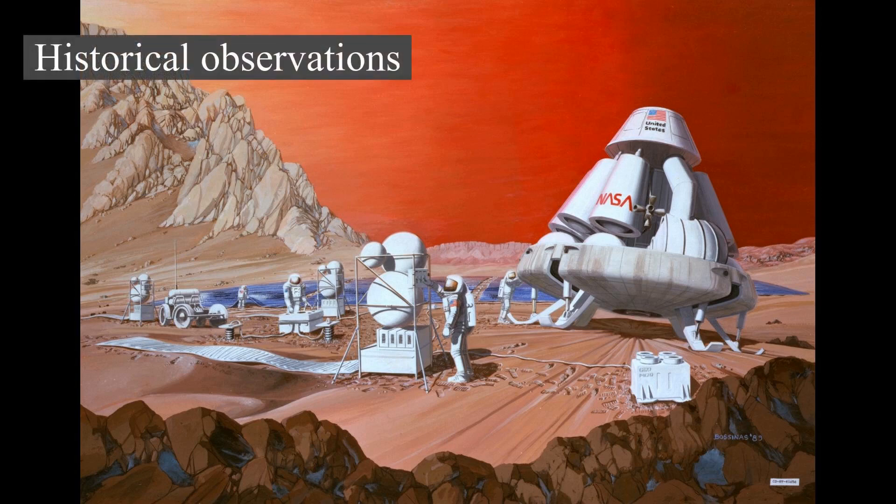The history of observations of Mars is marked by the oppositions of Mars, when the planet is closest to Earth and hence most easily visible, which occur every couple of years. Even more notable are the perihelic oppositions of Mars, which are distinguished because Mars is close to perihelion, making it even closer to Earth.